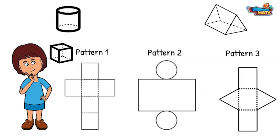Pattern two has two circle faces. If I were to put this together, I would create a cylinder.